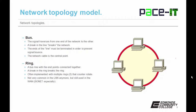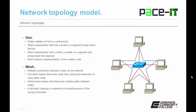Moving on from the ring, we have the star. The nodes radiate out from a central point. When a star topology is implemented with a hub, a break in a segment brings down the whole bus because the hub retransmits out all ports. When it's implemented with a switch, a break in a segment only brings down that segment. The star topology is the most common implementation in the modern LAN.